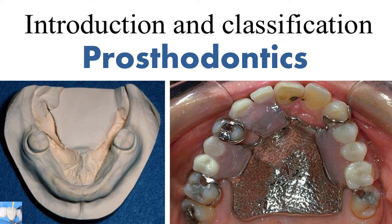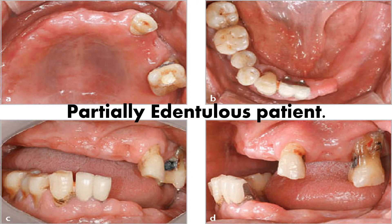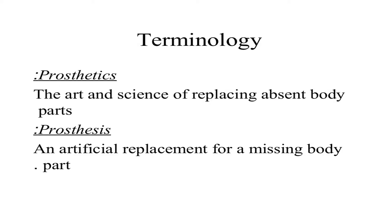Introduction and classification. Terminology in prosthetics: prosthetics is the art and science of replacing absent body parts. A prosthesis is an artificial replacement for a missing body part.